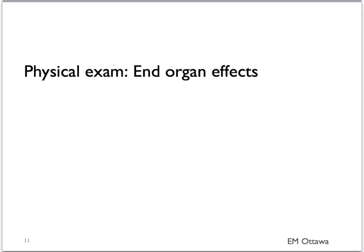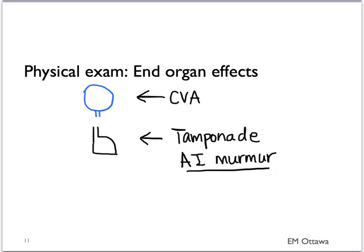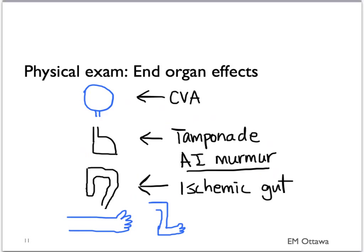Let's look at end organ effects. Based on what we discussed earlier, what do you think should be the physical signs of patients with aortic dissection? We'll be looking for signs of CVA, signs of tamponade. We would also look for an aortic insufficiency murmur. We'll look for presentation of an ischemic gut and signs and symptoms of an ischemic limb.